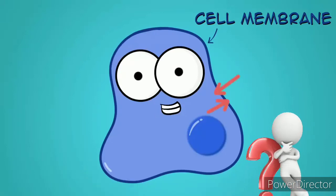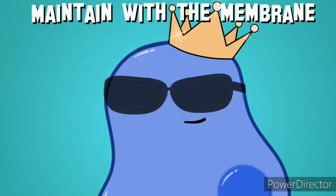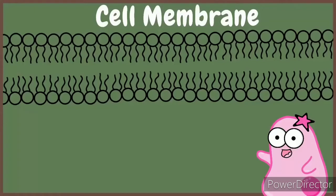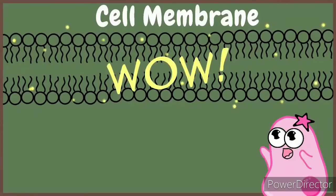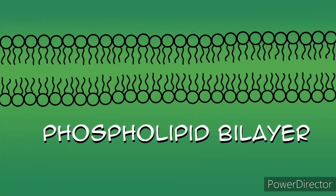By controlling what goes in and out, the cell membrane helps regulate homeostasis. Let's take a look at the cell membrane. You could have a whole course on the cell membrane itself — it has amazing structure and signaling abilities. But to stick to the very basics, it's made of a phospholipid bilayer.